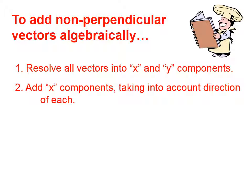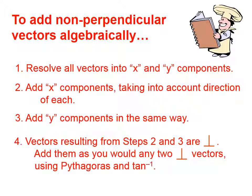Step 2, add the x components, taking into account the direction of each. Step 3, add the y components in the same way. Step 4, the vectors resulting from steps 2 and 3 are perpendicular. Add them as you would any two perpendicular vectors using Pythagoras and the inverse tangent.